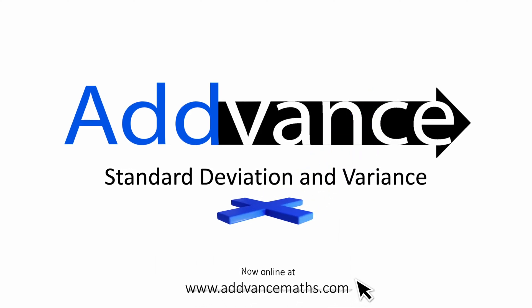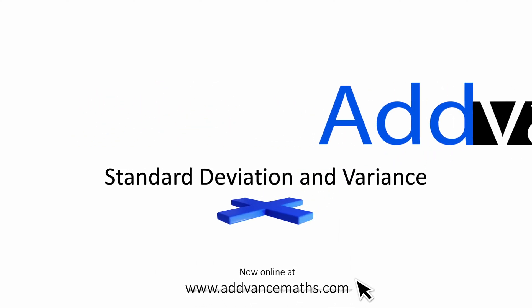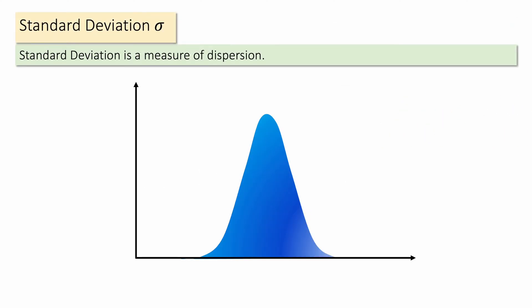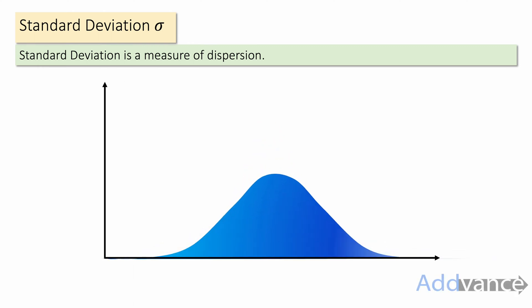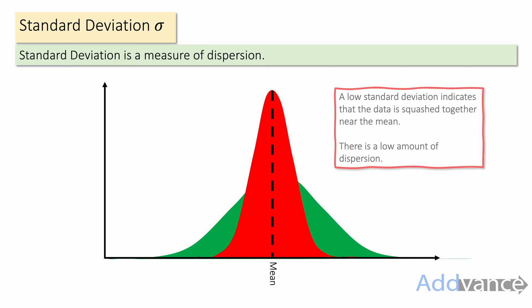Hello everybody and welcome back to Advanced Maths. Today we're looking at standard deviation and variance. Standard deviation, with the symbol sigma, is a measure of dispersion. Here we have a set of data and can see that it's all grouped together in the middle, whereas this data set here is more spread out. We can compare these using standard deviation.